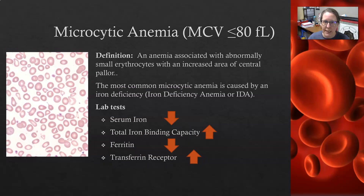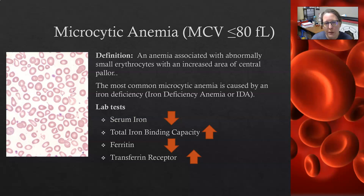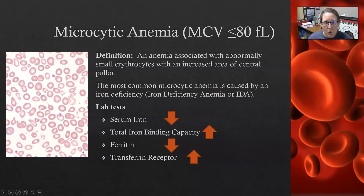Next is microcytic anemia, where the MCV is less than 80 femtoliters. Microcytic anemia is associated with abnormally small erythrocytes with an increased area of central pallor, meaning they have less hemoglobin. Some are very tiny and oddly shaped. The most common cause of microcytic anemia is iron deficiency — iron deficiency anemia, or IDA.